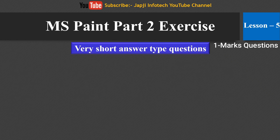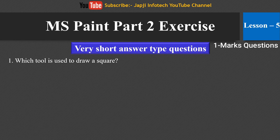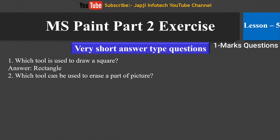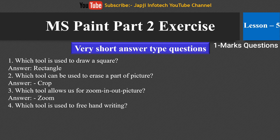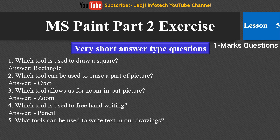Now we will learn about very short answer type questions. The first question is: which tool is used to draw a square? The right answer is the rectangle tool. The next question: which tool can be used to erase a part of the picture? The right answer is the crop tool. Third: which tool allows us to zoom in and zoom out of a picture? The right answer is the zoom tool. Fourth: which tool is used for freehand drawing? The right answer is the pencil tool. Fifth: what tool can be used to write text in our drawing? The right answer is the text tool.